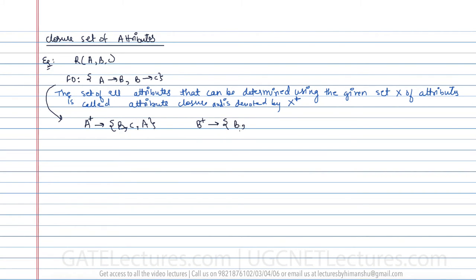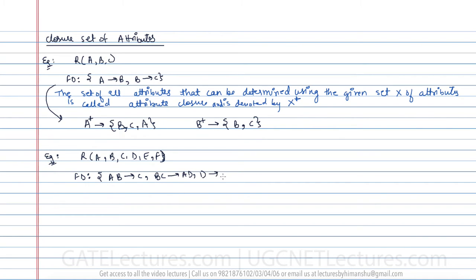The closure of B: B can determine itself (trivial), and since B determines C, we can determine C. So B closure is {B, C}. Now let us take another example: relation R{A, B, C, D, E, F} with functional dependencies AB→C, BC→AD, D→E, CE→B. We want to find the closure of AB. With the help of AB we can determine AB itself.